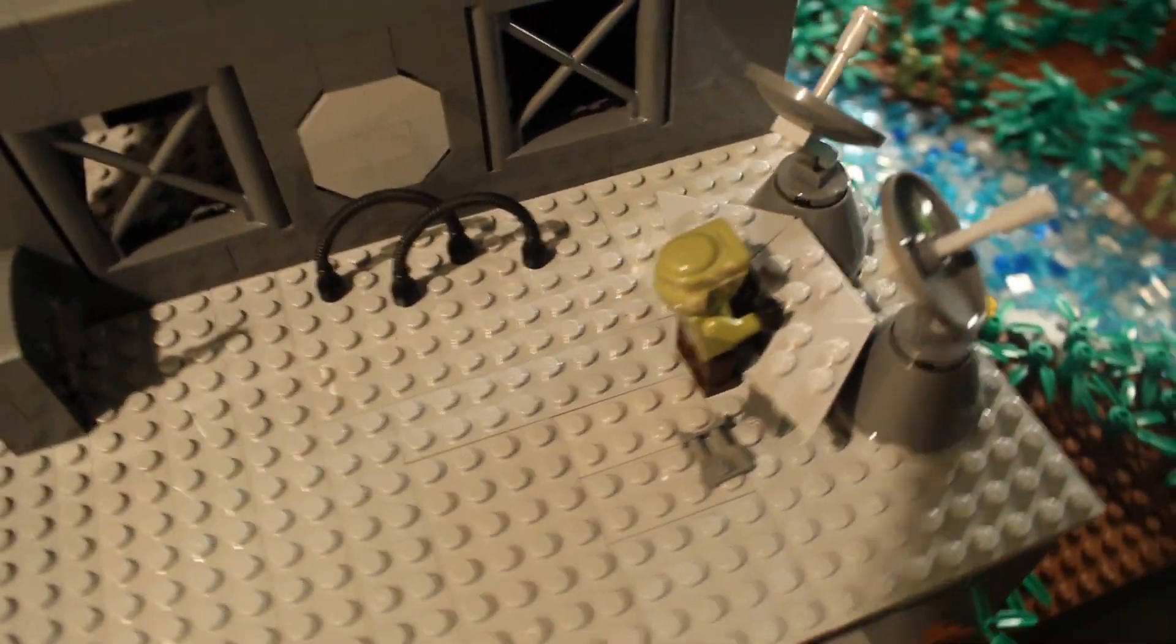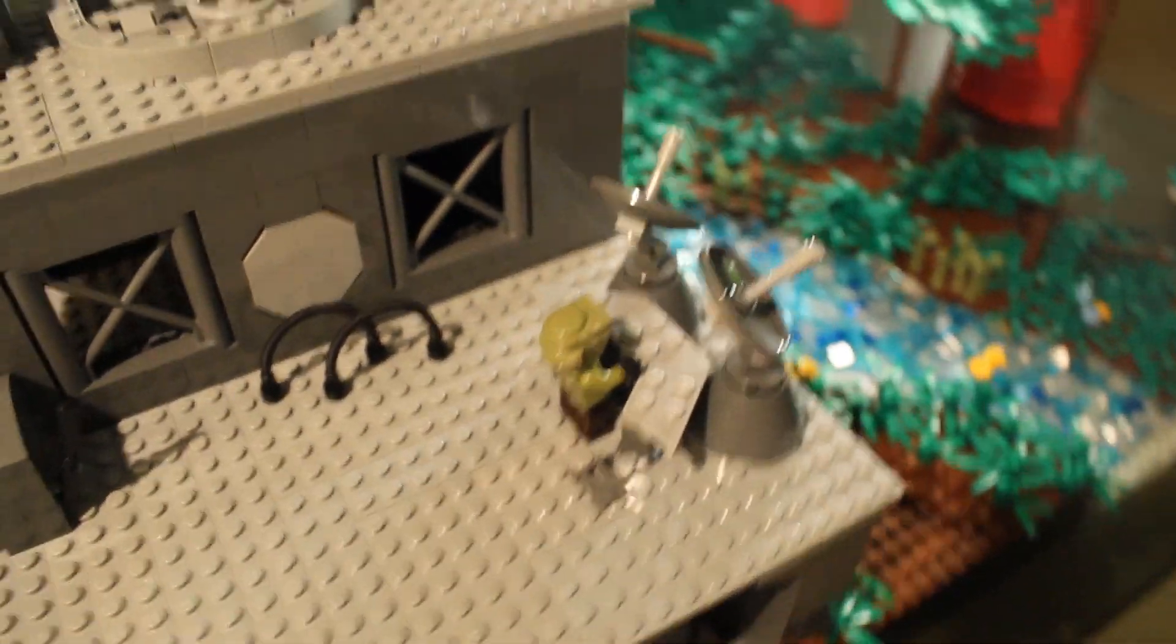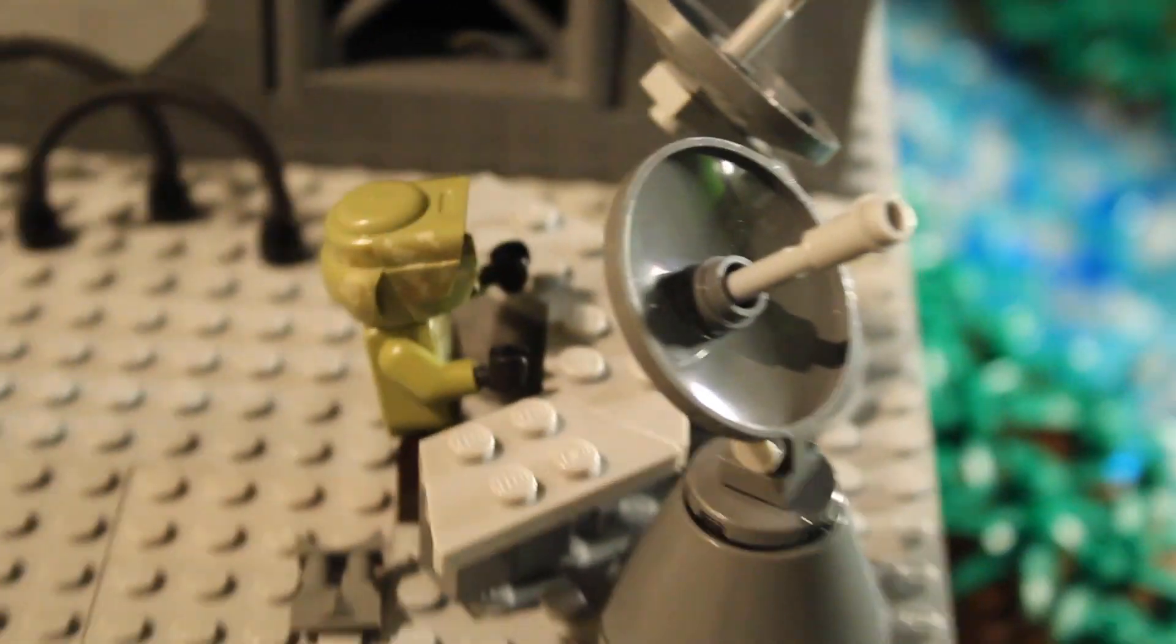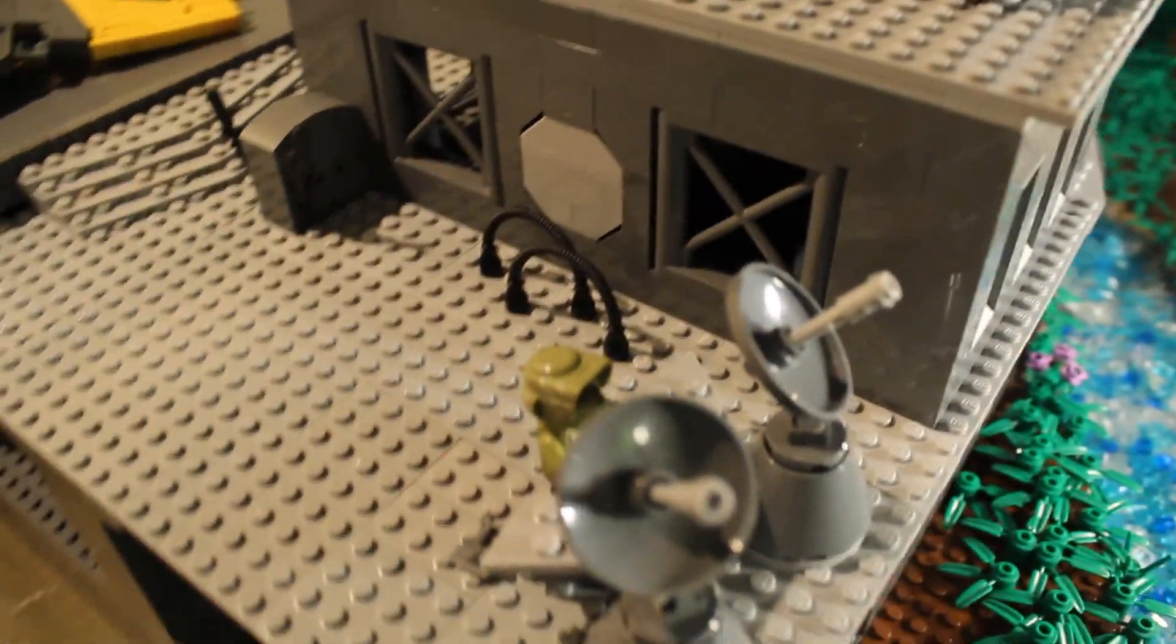I did a little rough draft mock-up of the communications area, and that includes these two dishes that you can see as well as the little control area that this guy is manning.